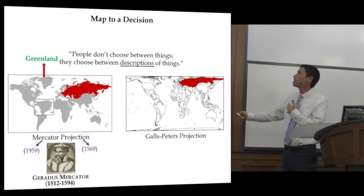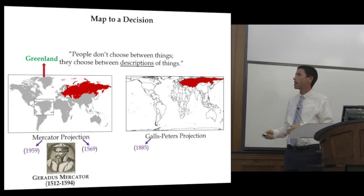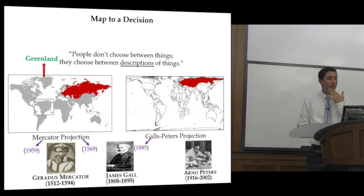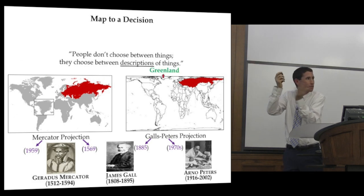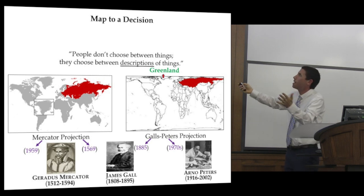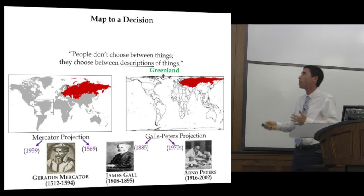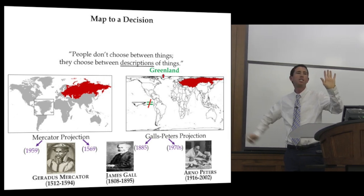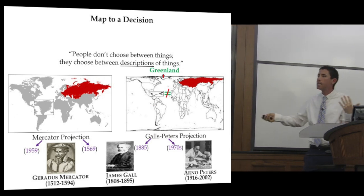This is the Gall-Peters projection. This started in the 19th century with a Scottish cartographer named James Gall, and it got more popular from Arnaud Peters in the 1970s. And here, if we stick again to Greenland, we notice that Greenland shrank. This is a much smaller and maybe more accurate representation, at least compared to our reference points before. Now we see South America much bigger than Greenland, and also Africa much bigger than Greenland.